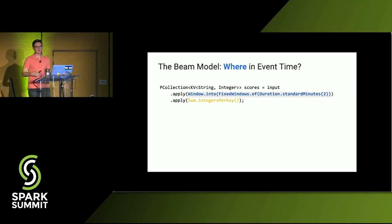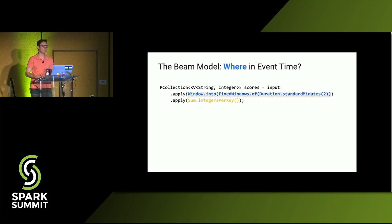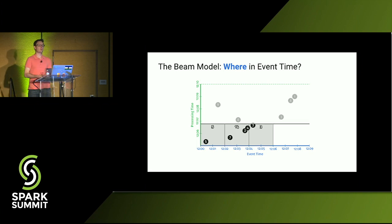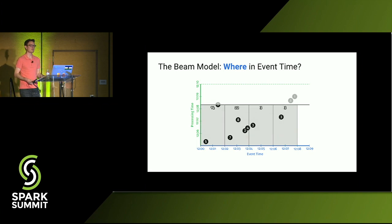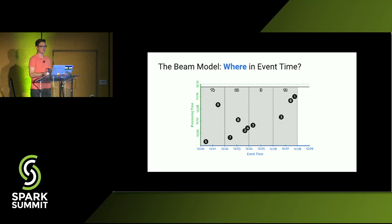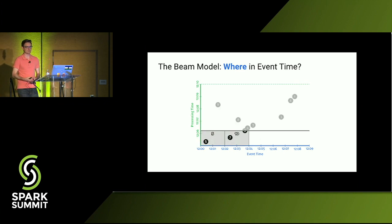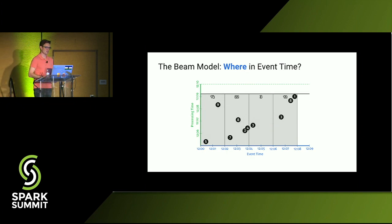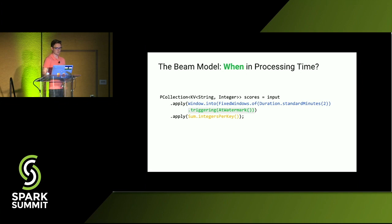We can make it more complex with Beam by thinking about windowing. Instead of waiting for one giant batch, can we sum scores every two minutes? In Beam, you can do that quite easily. You can sum all the scores windowed by two minutes. But we're not actually emitting results until the whole batch is complete — a step in the right direction, but it still has flaws because we're waiting for the data to be emitted.